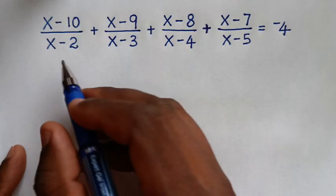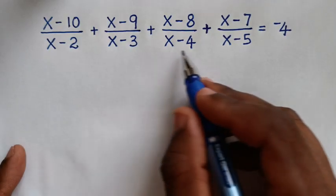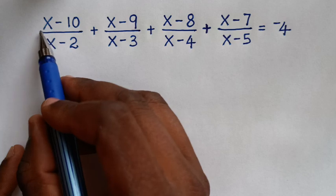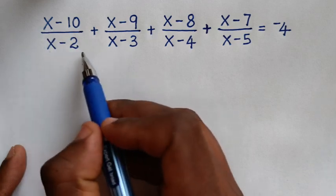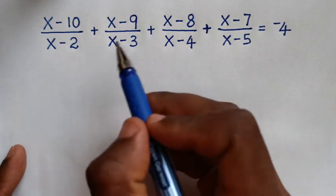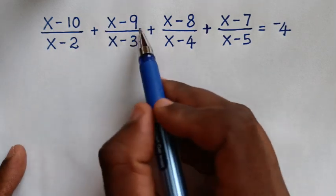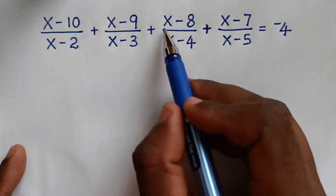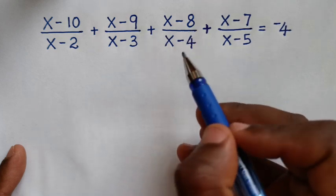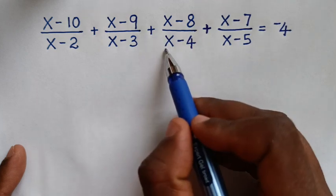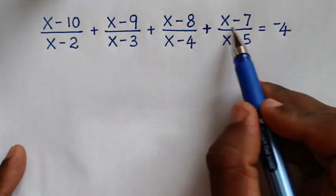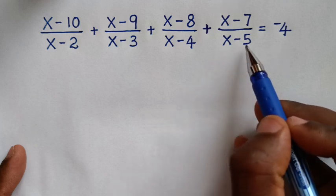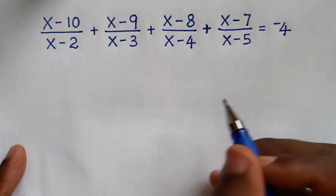You are welcome to solve this math problem which is x minus 10 over x minus 2, plus x minus 9 over x minus 3, plus x minus 8 over x minus 4, plus x minus 7 over x minus 5, is equal to negative 4.